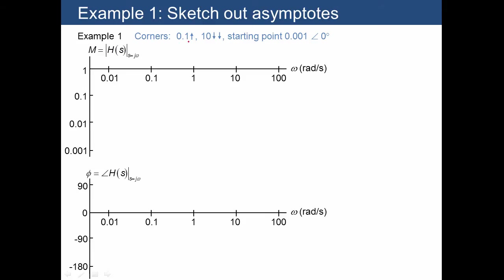Starting with Example 1, we already knew that we had a starting point at 0.001 at a frequency of 0.01, so we started right here with a starting slope of zero — a straight horizontal asymptote. When we hit 0.1, we need an asymptote with a slope of positive 1. Then when we hit 10, we have a minus 2 change in slope, so that takes the slope from plus 1 down to minus 1.